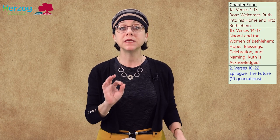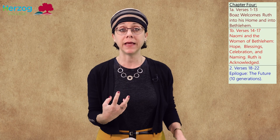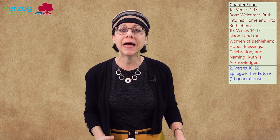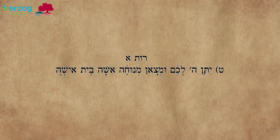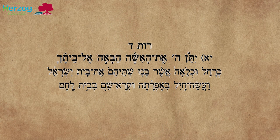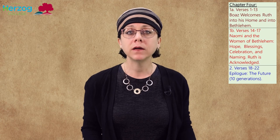Note the similarity between the words that welcome Ruth into the community in chapter four and Naomi's previous words in chapter one, which were designed to push Ruth back to Moab — 'let God give you a resting place, each woman in the house of her husband.' In chapter four, Ruth is welcomed into the house of Boaz, the house of Israel, with the words: 'Let the woman who is coming into your house be like Rachel, let her be like Leah.' It's the opposite movement of chapter one — chapter four welcomes Ruth into the community, welcomes Ruth into the house.